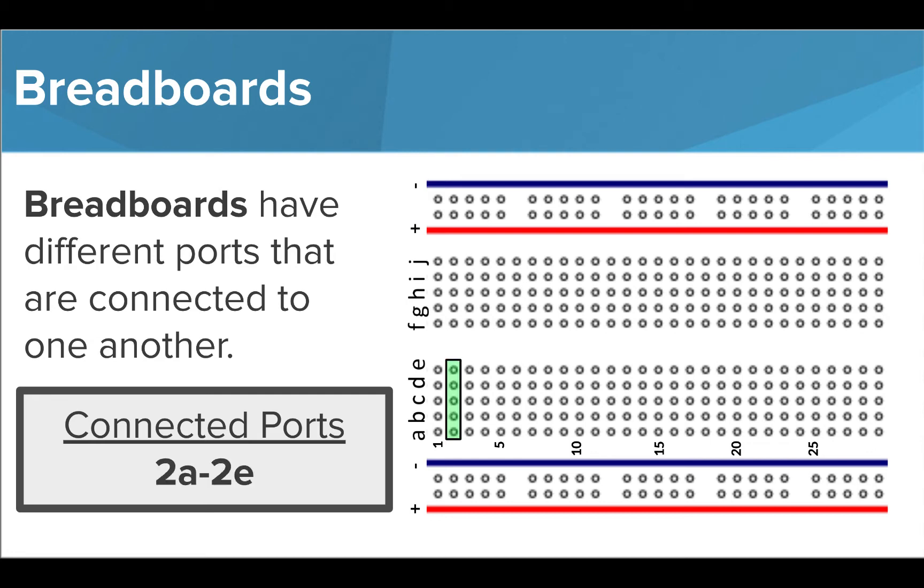This connection style continues down our board, so port 2a is connected to 2b, 2c, 2d, and 2e. And port 2f is connected to 2g, 2h, 2i, and 2j.